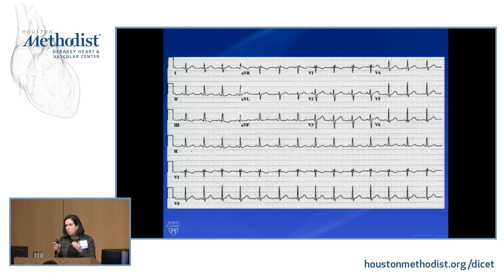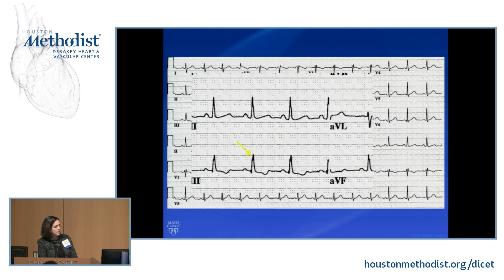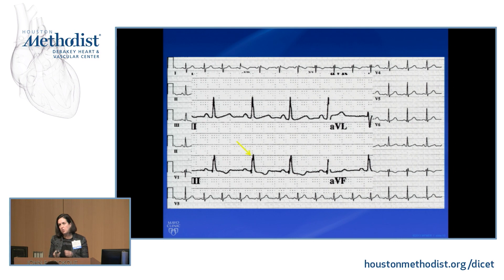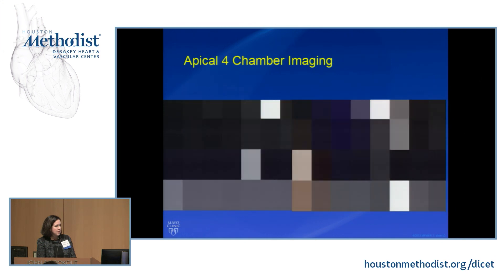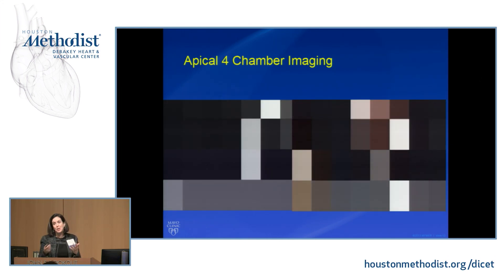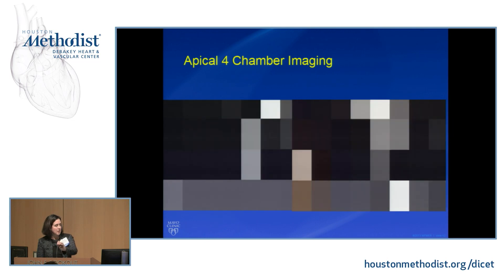On EKG, we tend to have right axis deviation with a right bundle branch block pattern for most defects. One unique feature for secundum ASDs is a little notch at the peak of the QRS in leads II and III — that's called crochetage, meaning 'knitting needle.' This is actually seen quite commonly in patients with secundum ASDs and can be a useful hint on the EKG. My slides melted down so I unfortunately have no cool echo pictures to show you, but echo is the gold standard.